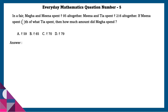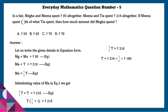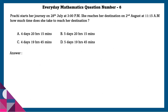Question 5: In a fair, Mega and Mina spent 95 rupees altogether. Mina and Tia spent 216 rupees altogether. If Mina spent one-fifth of what Tia spent, then how much money did Mega spend? Writing the given information in equation form and substituting the value: Tia spent 180 rupees, Mina spent 36 rupees, and Mega spent 59 rupees.